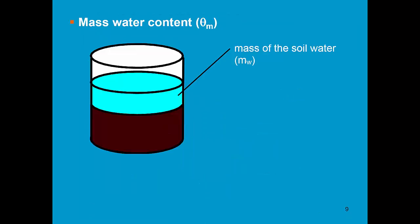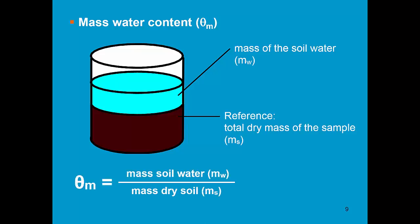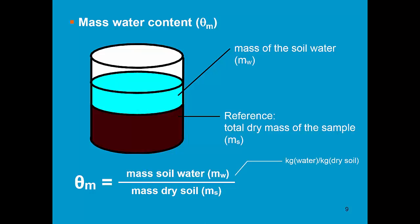When we express the soil water content on a mass basis, we look at the mass of the soil water and express it with reference to the total dry mass of the sample. The mass water content, theta m, is the mass of the soil water over the mass of the dry soil. The units are kilograms of water per kilogram of dry soil. Often it is expressed as a percentage, so if we multiply by 100 we obtain mass percentage.